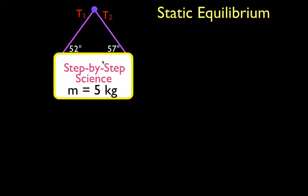This problem involves static equilibrium. Static because the object is not moving, and equilibrium because the net force acting on the object must be zero — all the forces are in equilibrium. For static equilibrium, we can sum up the forces in the x-direction and sum up the forces in the y-direction. We sometimes also need to sum up all the torques, the turning forces, but in this situation there is no torque, so we're only going to sum up forces in x and y.